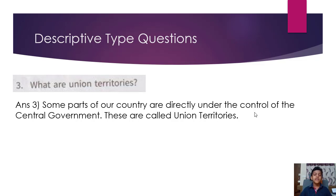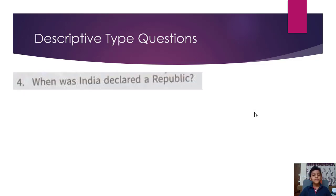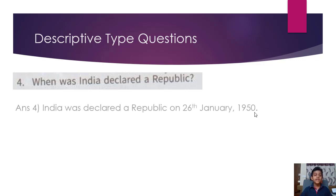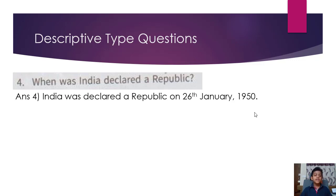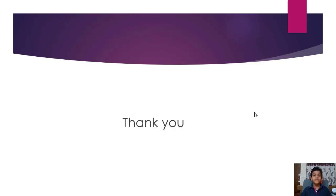When was India declared a republic? India was declared a republic on 26th January 1950. Thank you.